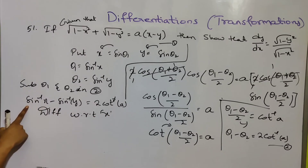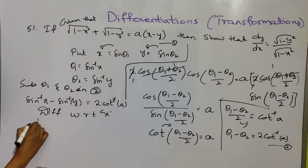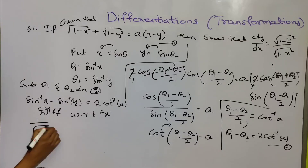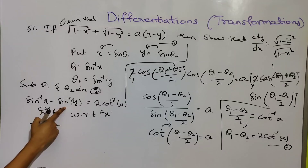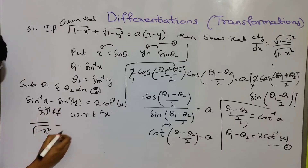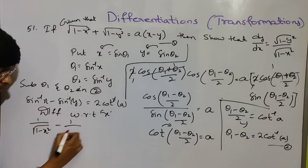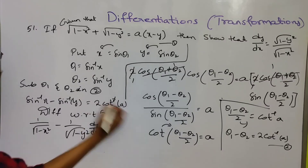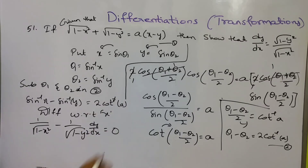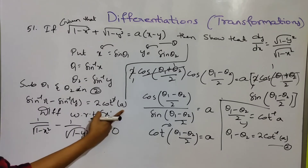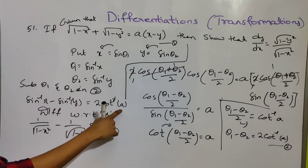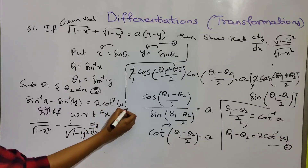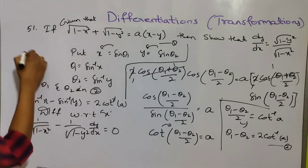Differentiating sin⁻¹(x) - sin⁻¹(y) = 2 cot⁻¹(a) with respect to x: the derivative of sin⁻¹(x) is 1/√(1-x²), and the derivative of sin⁻¹(y) is 1/√(1-y²) · dy/dx = 0, since the derivative of cot⁻¹(a) is 0 as a is constant.